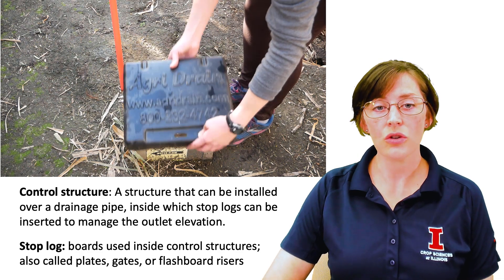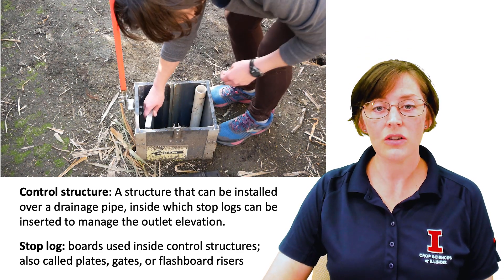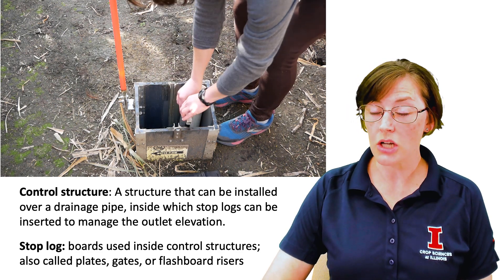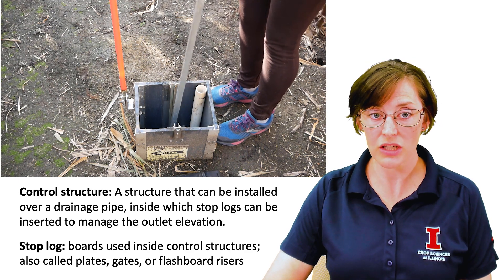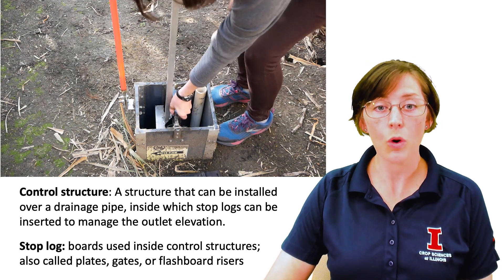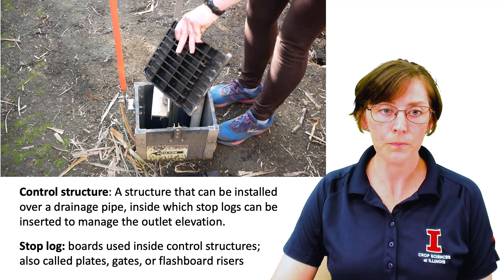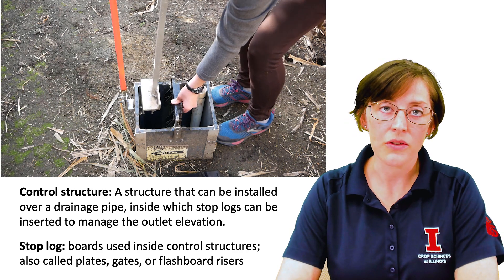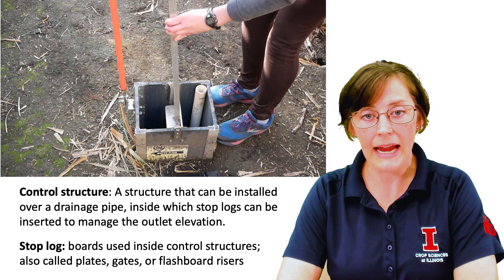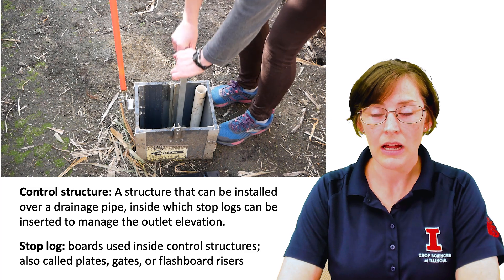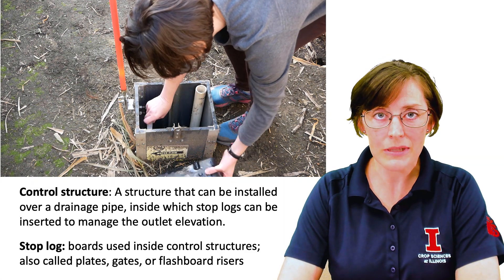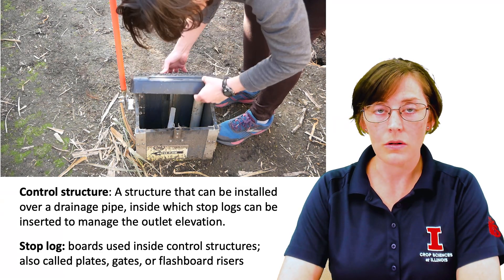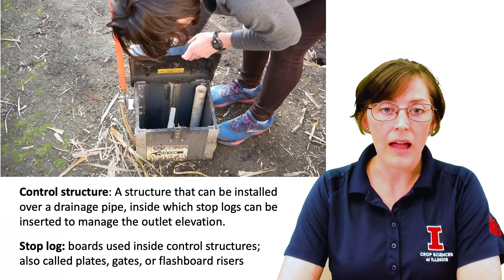The control structures create the physical infrastructure required for this practice of controlled drainage. It's usually not just one control structure per field or per drainage system; it may actually require more than that depending on the field slope. Inside the control structure we use boards, sometimes called stop logs, sometimes called plates, gates, or flashboard risers. These are essentially mini check dams inside the control structure. These boards are raised and lowered, or added and removed, as we discussed before.